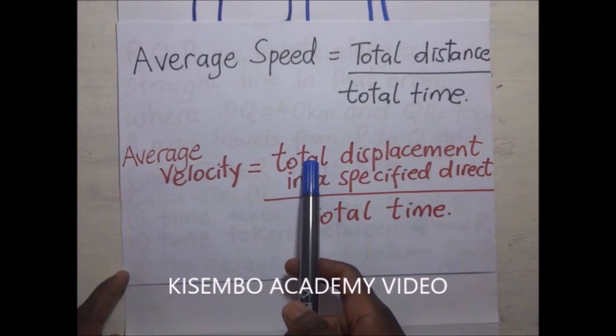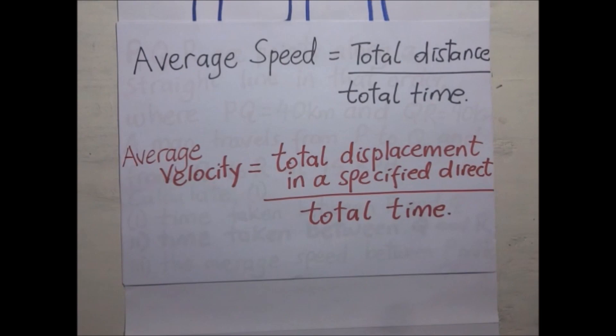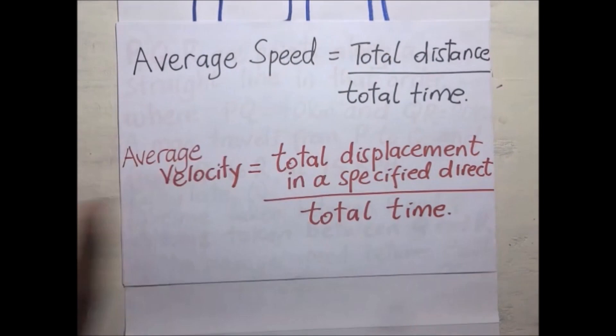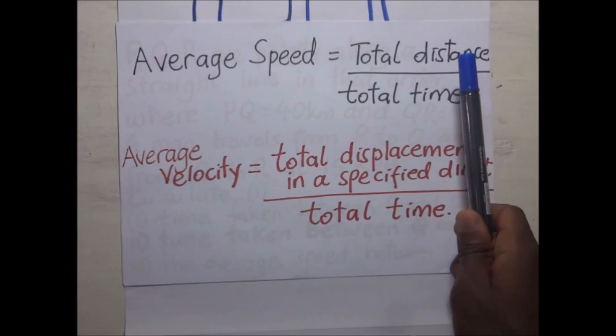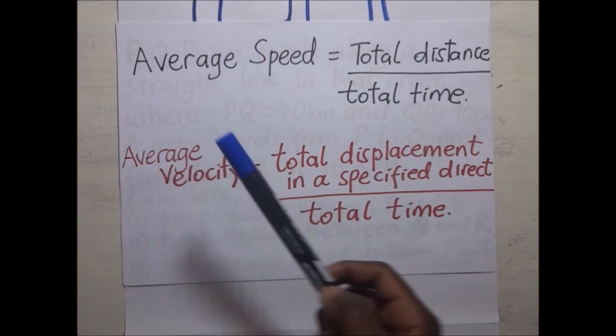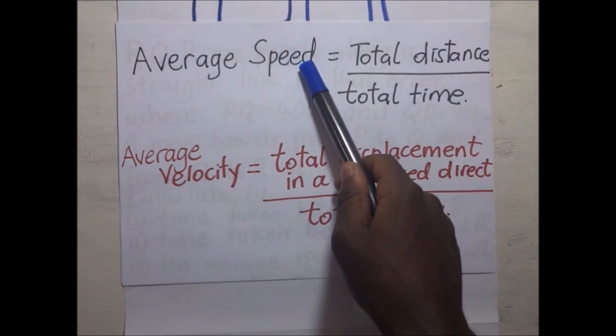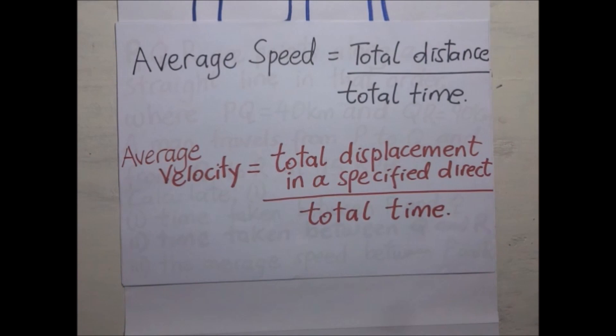Average speed equals total distance covered divided by total time taken. Average velocity equals total displacement in a specified direction divided by total time. Both average speed and average velocity have the same SI units — meters per second or kilometers per hour. The difference lies in their formulas and the quantities they use.